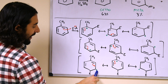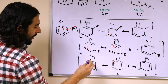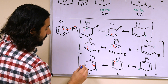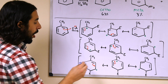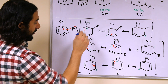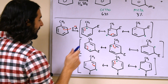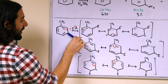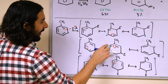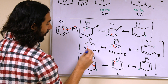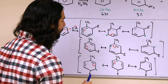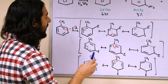For ortho and para substitution, the three locations where the carbocation can be found on the intermediate are the same. With meta substitution it's different — the carbocation ends up at the opposite locations from ortho and para substitution. Does that matter? It turns out it does.